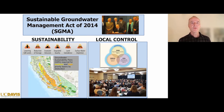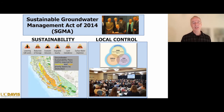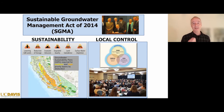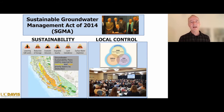SGMA is based on two foundational principles. First, groundwater shall be managed sustainably — meaning in ways such that future generations can enjoy this resource in the same way we enjoy it today. Second, groundwater shall not be managed by the state or by a few technocrats; it shall be managed locally by stakeholders in a democratic way, with a local agency and an elected board that engages stakeholders in the design and decision making for a sustainable groundwater future.